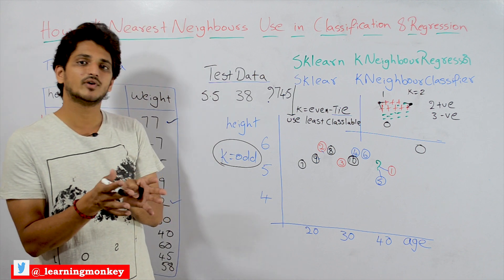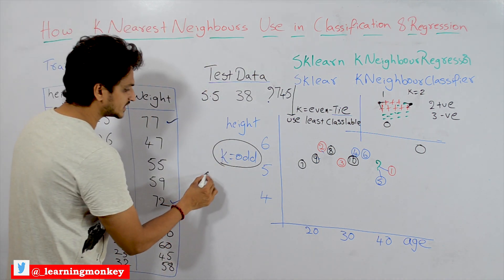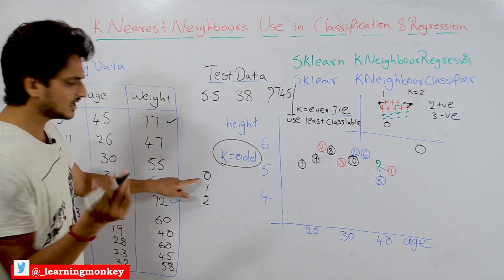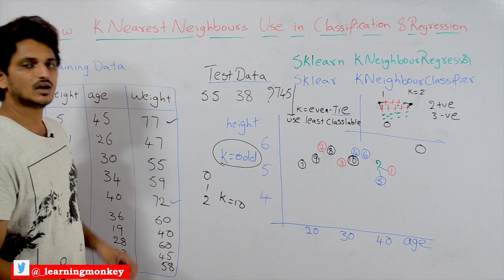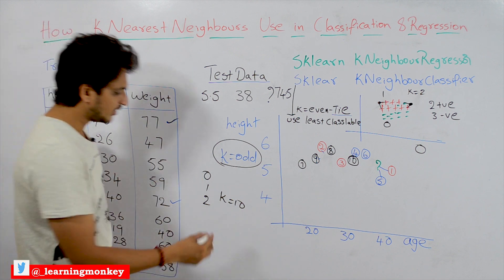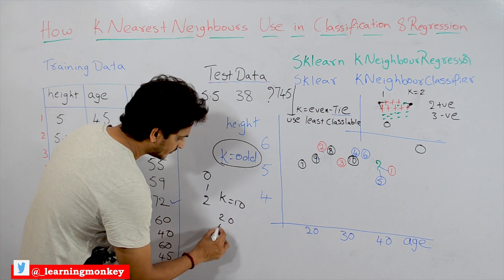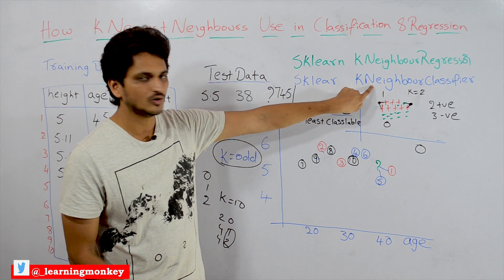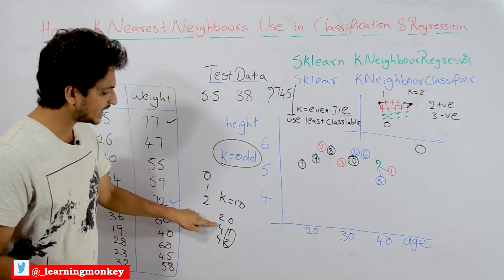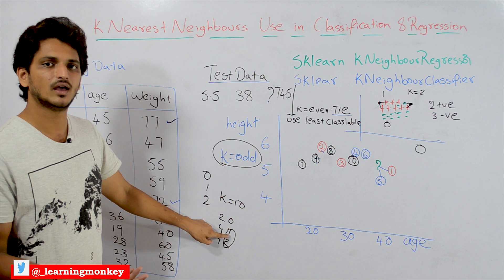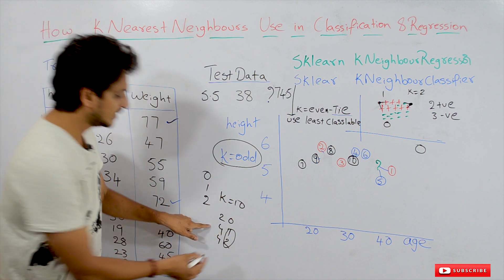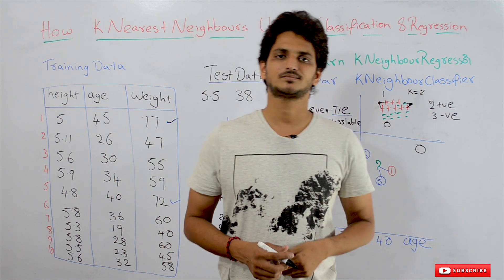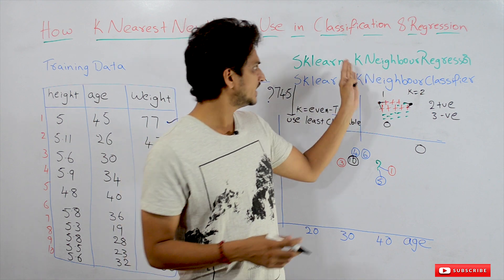The same concept applies to multi-class classification. For example, in a three-class problem with classes 0, 1, and 2, if k equals 10 and the 10 nearest neighbors include 2 from class 0, 4 from class 1, and 4 from class 2, we get a tie between classes 1 and 2. The model picks the majority class, and in case of a tie, it picks the least class label — so class 1 is selected. This is how KNN is implemented in sklearn for both classification and regression.